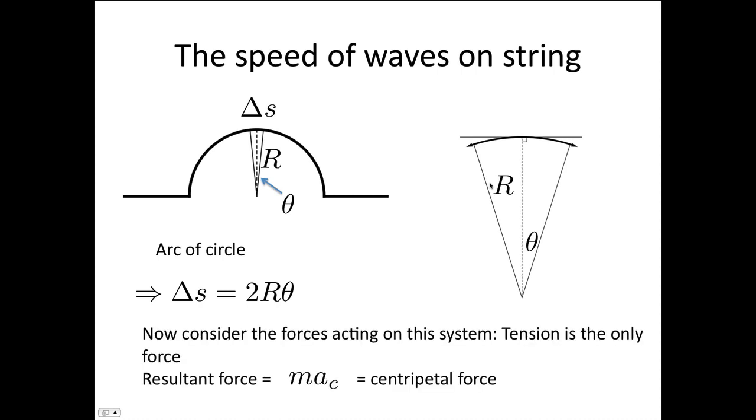Now we're going to think about all the forces acting on the system. We have tension pulling the string down in this direction and tension pulling the string down in that direction. Those are the two forces acting on it, and the result is that this undergoes circular motion. So the resultant force equals mass times the centripetal acceleration.